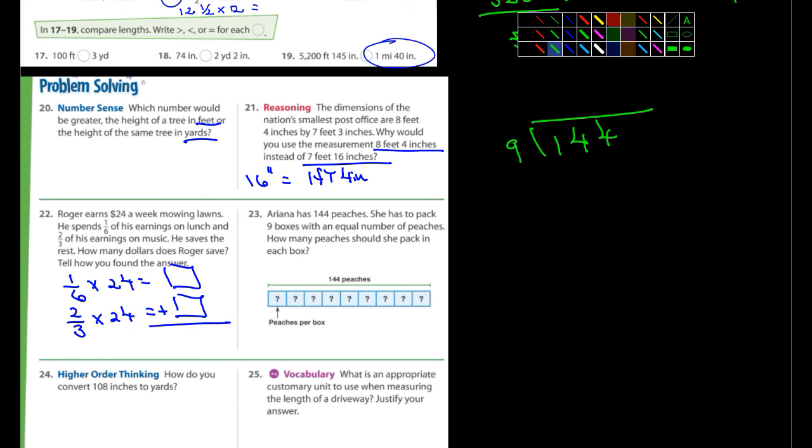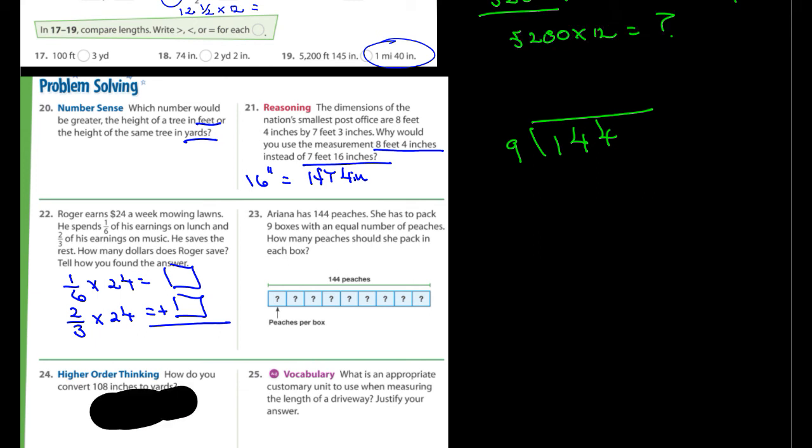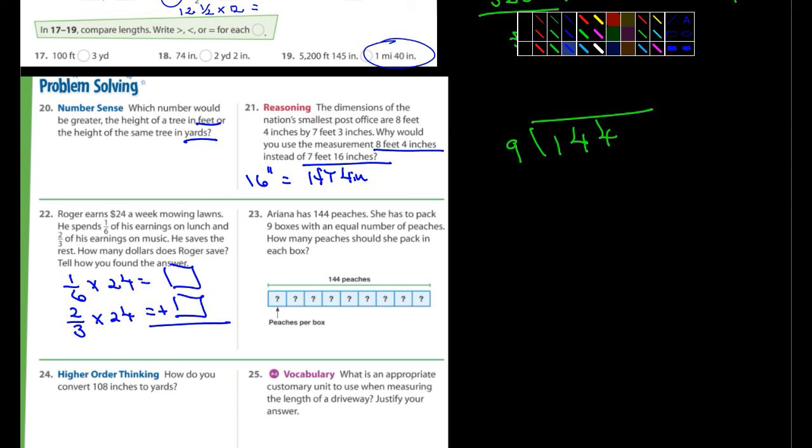24. How do you convert 108 inches to yards? Well, you guys should know how to do that. 108. First thing you're going to do is, you need to convert it. How do you convert 108 inches to yards? Well, first you need to do is convert it to the next step up, which would be feet. So, 108 is how many feet? We'll divide that by 12. And then, however many feet, that'll tell you how many yards it is. And remember, there's three feet to one yard.